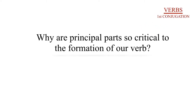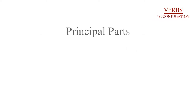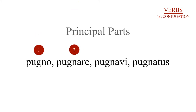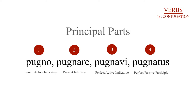Why are principal parts so critical to the formation of our verb? Because principal parts provide us with a starting place for the conjugation of our verb. The first principal part, pugno, is the present active indicative, first person singular: I fight. The second principal part is pugnare, the present active infinitive. It provides you with the stem, pugnare, the theme vowel, a, and if you take off the -re, you attach your personal endings. The third principal part — pugnare again — if you take off the -i, you're left with the stem for the perfect system. Finally, the fourth principal part is the perfect passive participle.